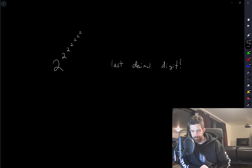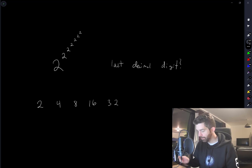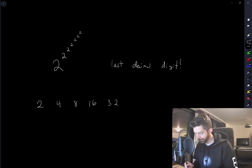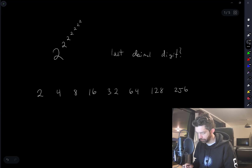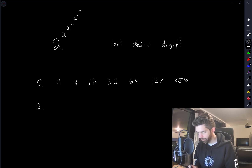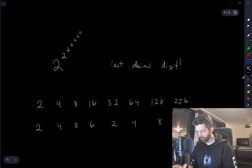So if I write out powers of 2: 2, 4, 8, 16, 32, 64, 128, 256 — there's clearly a pattern in the last digit: 2, 4, 8, 6, 2, 4, 8, 6. So we just need to figure out where in this cycle this number falls.